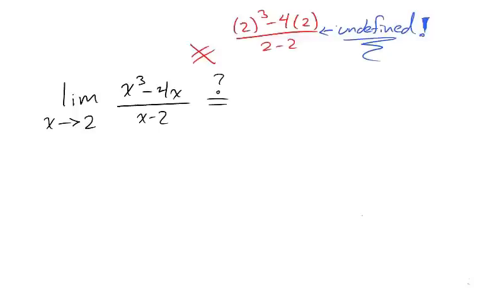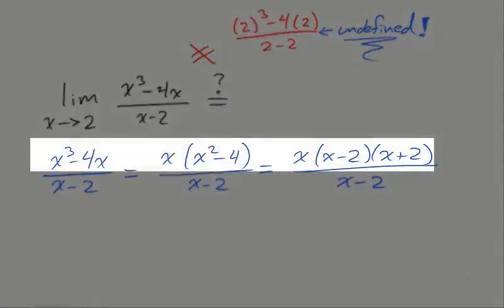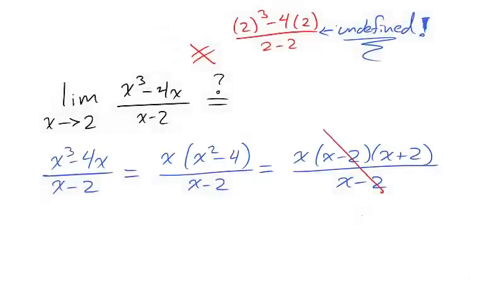First, notice that this function is not simplified. We can factor the numerator by first pulling out an x and then factoring a difference of squares, and then canceling x minus 2. We can write the rational function as a polynomial x times x plus 2.